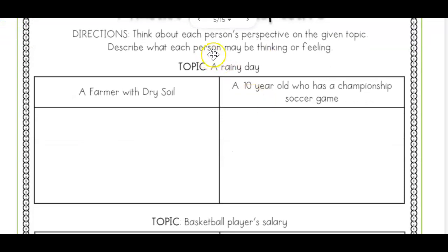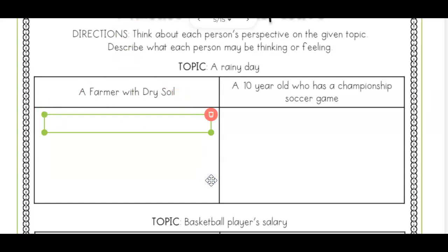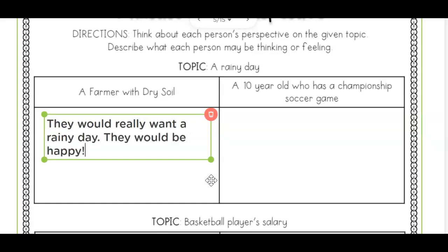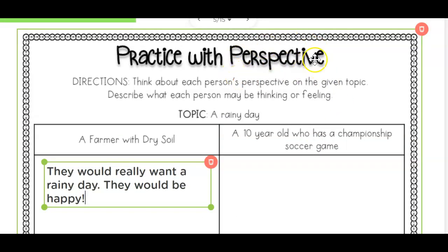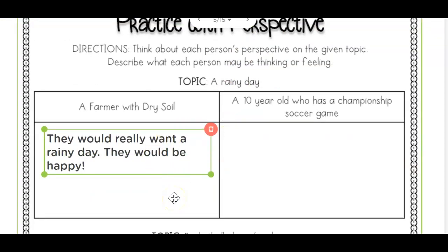Let's look at this first one — a rainy day. How would a farmer with dry soil think about a rainy day? Would they really want it, or would they hate it? They would really want a rainy day. They would be happy. That is their perspective — that is how they see a rainy day. Go ahead and type that out. Pause the video if you need to.